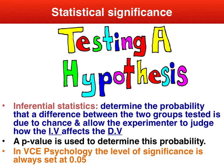Importantly, based on descriptive statistics alone, we cannot determine the significance of a set of results. We need the second category, inferential statistics, which determine the probability that a difference between the control and experimental group is due to chance, thus enabling us to make an inference on the significance of the results. In VCE psychology, the inferential stat we use is the p-value, p standing for probability, and we set the level of significance at 0.05, which acts as a confidence interval.